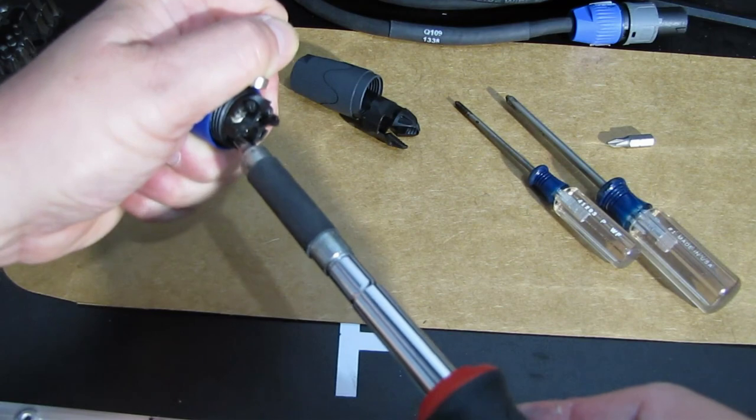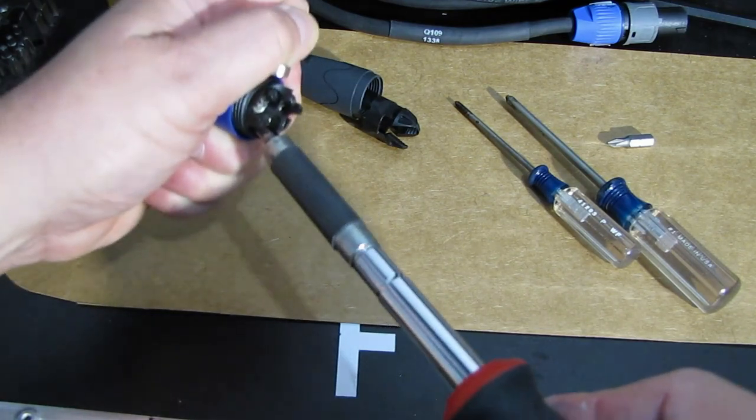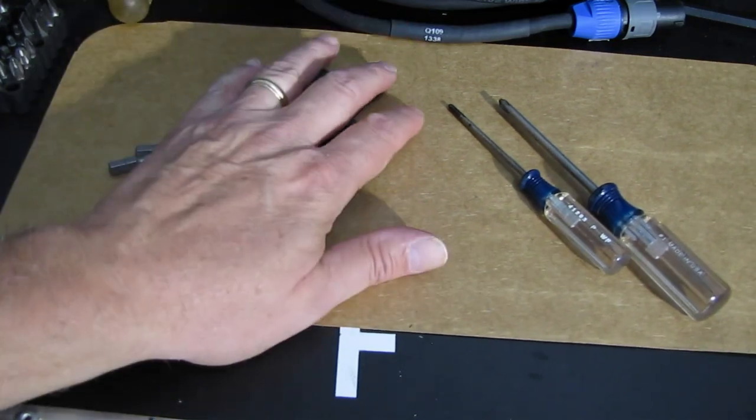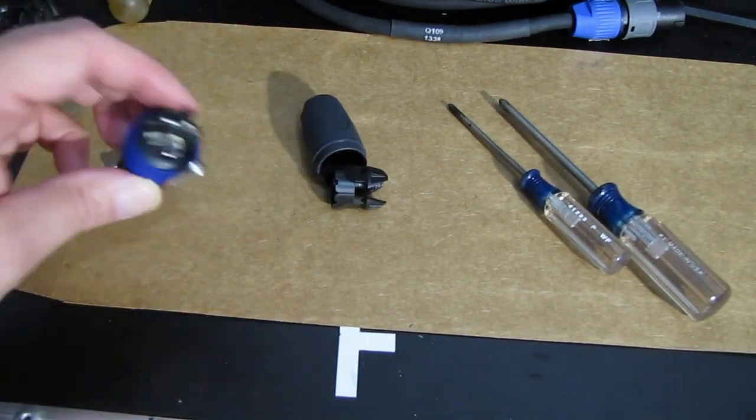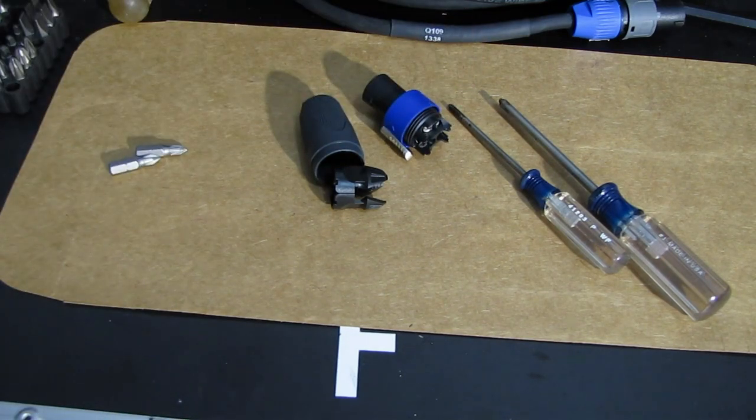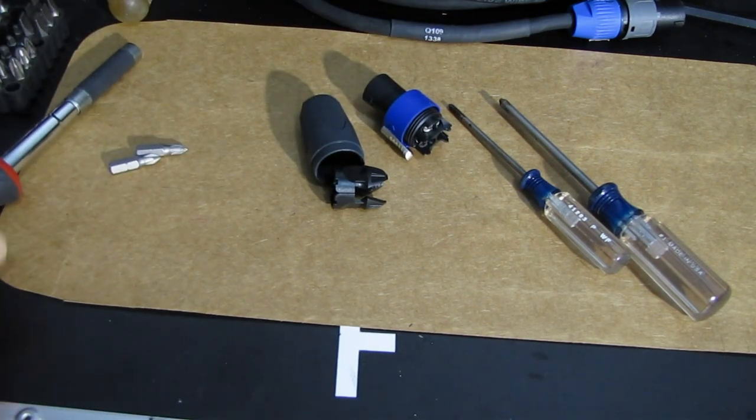And I can turn it just a little bit more, but I'm putting some decent pressure on it and it is not coming out. So anyway, I hope this helps, especially if you're used to making your own cables and you're wondering why stuff is stripping out or you can't really get a good torque on it.